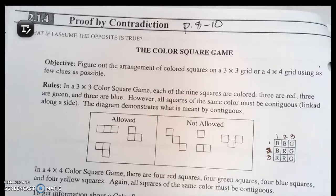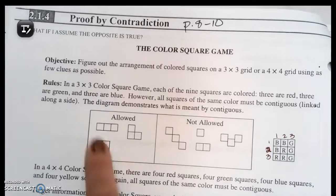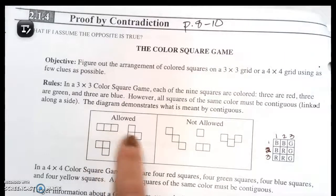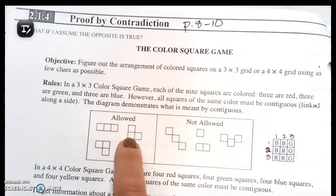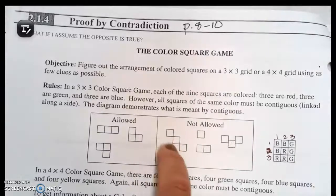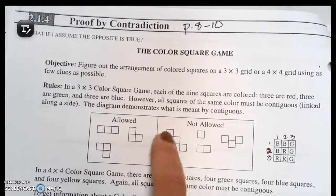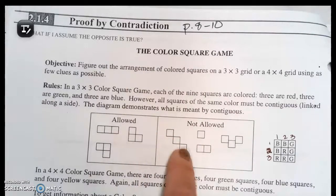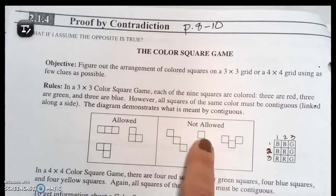However, all the squares of the same color must be continuous, meaning they're linked along at least one side. The diagram demonstrates what is meant by continuous. They could be linked on two sides, but you can't have them linked just by a corner. That's not allowed, and certainly off by itself is not allowed.